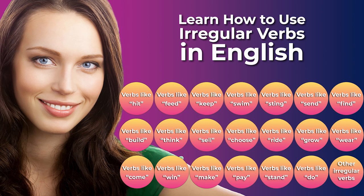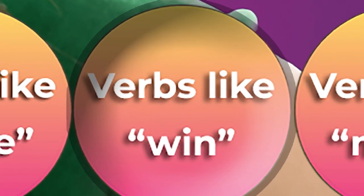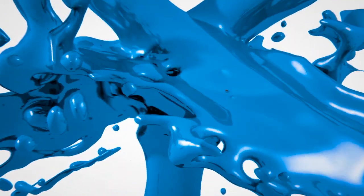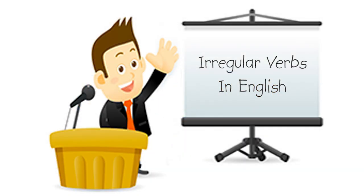These 21 short videos will help you quickly see and understand the relationships and patterns among various types of irregular verbs in English so that you can use them correctly. This video will help you see relationships among various types of irregular verbs in English. The key to understanding irregular verbs is to look for and notice the patterns.